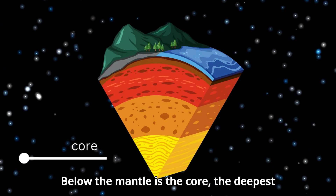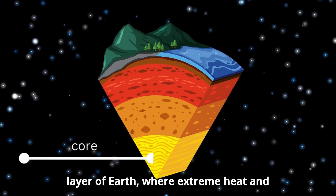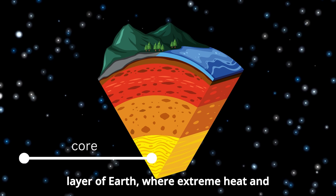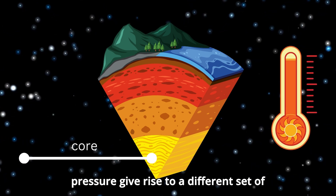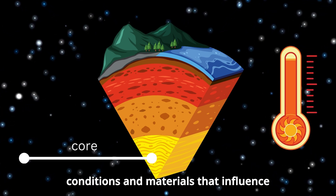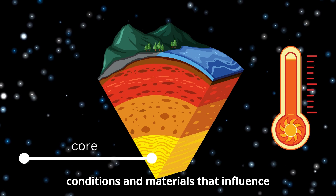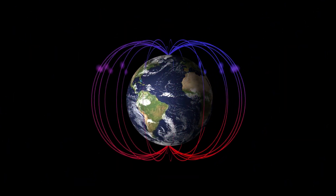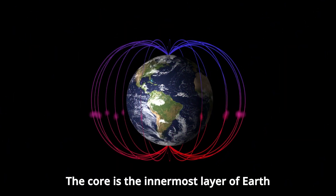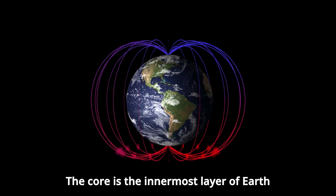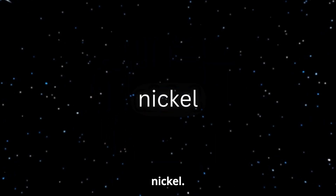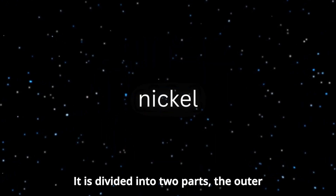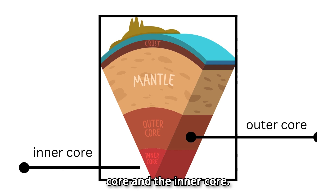Below the mantle is the core, the deepest layer of Earth, where extreme heat and pressure give rise to conditions that influence the planet's magnetic field. The core is the innermost layer and is composed mostly of iron and nickel. It is divided into two parts: the outer core and the inner core.